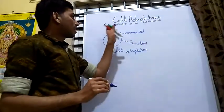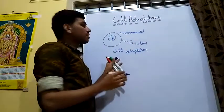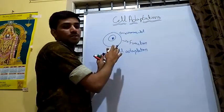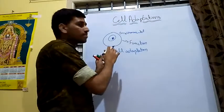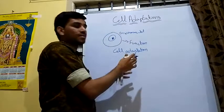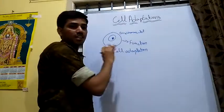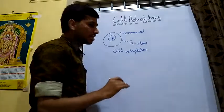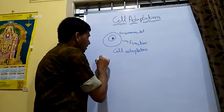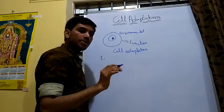Any environmental factors or adverse conditions alter the function of the cell. The cells continue to function by means of small alterations or cell adaptations. In cell adaptations, there are mainly five types.